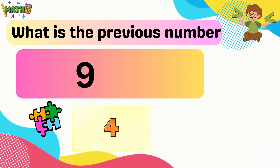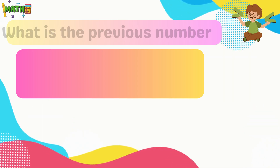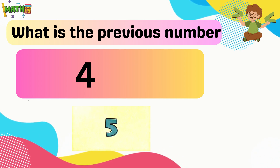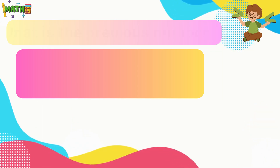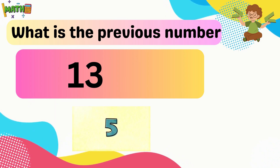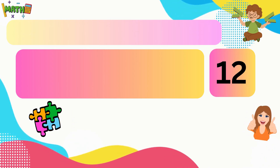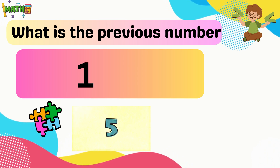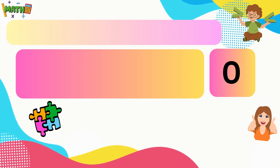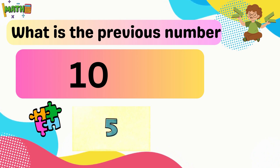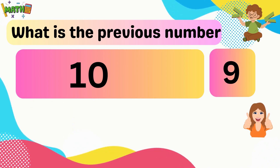What is the previous number? Eight. Three. Twelve. Twelve. Zero. Nine.